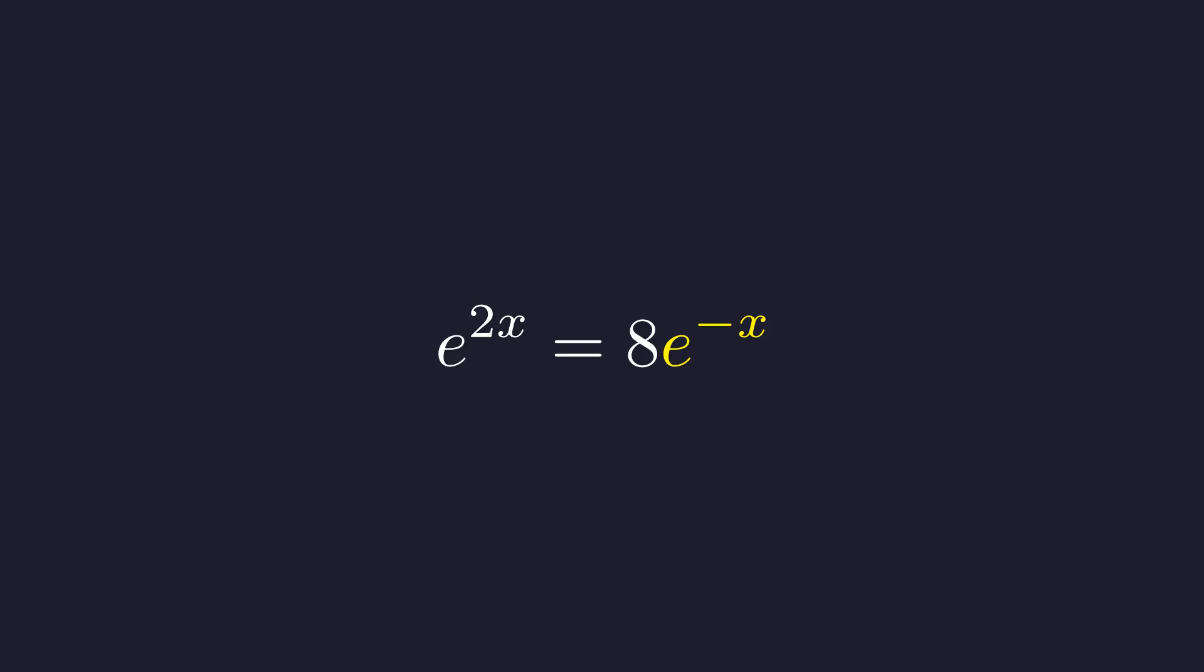Notice we have this e to the negative x term on the right. If we multiply both sides by e to the x, it cancels with e to the negative x, leaving us with e to the 2x times e to the x equals 8. Now, here's where exponent rules come in. When you multiply exponentials with the same base, you add the exponents. So, 2x plus x gives us 3x and we get e to the 3x equals 8.